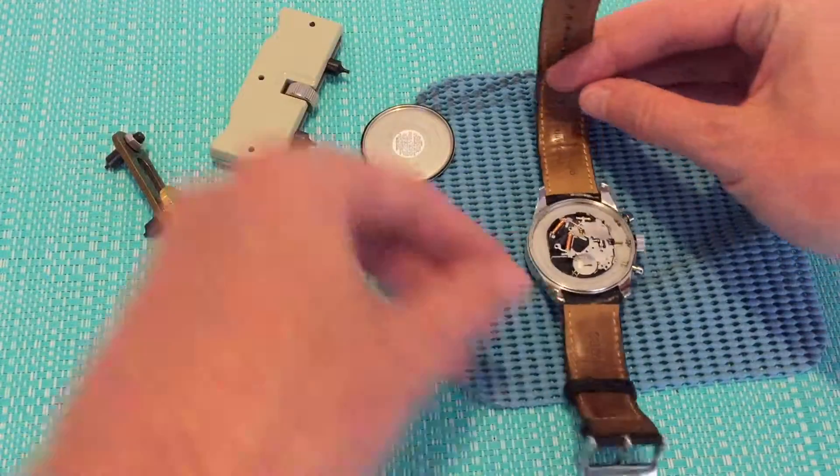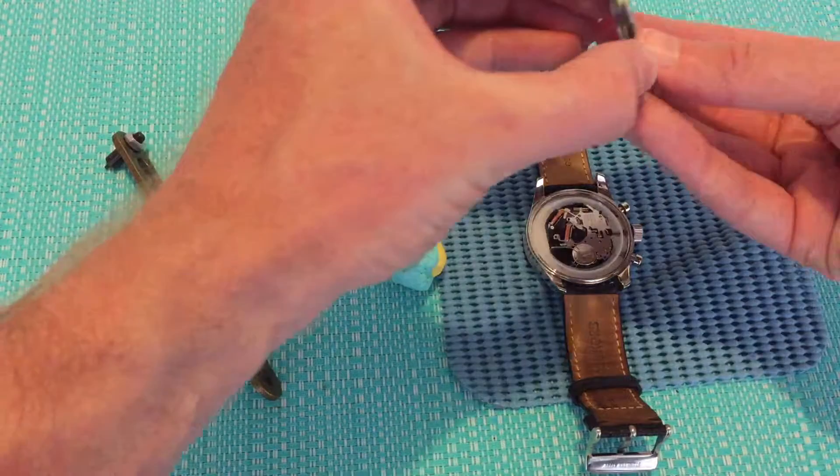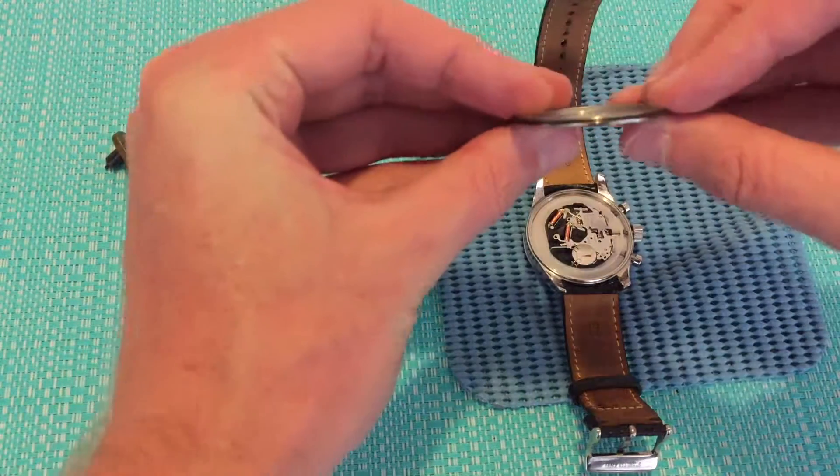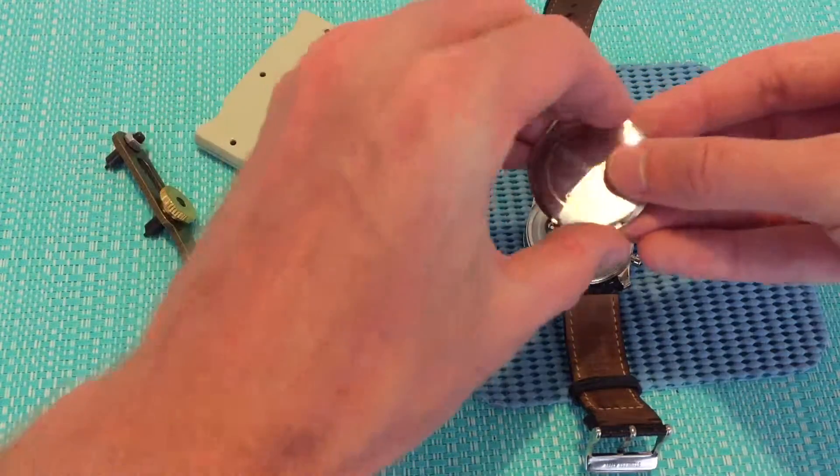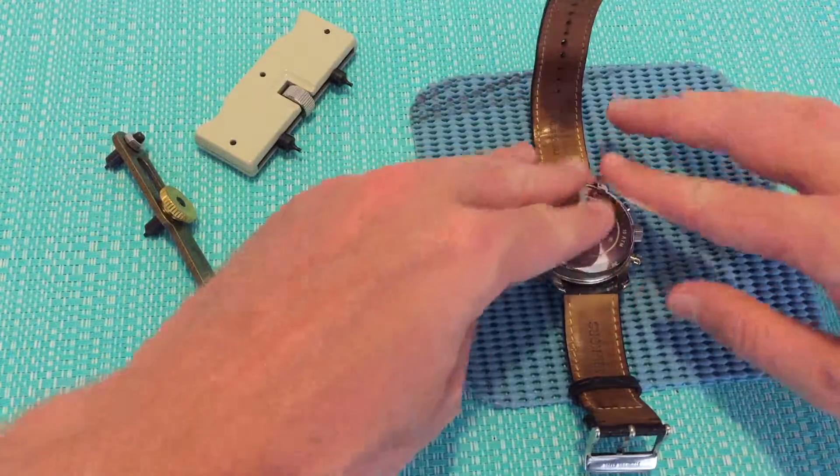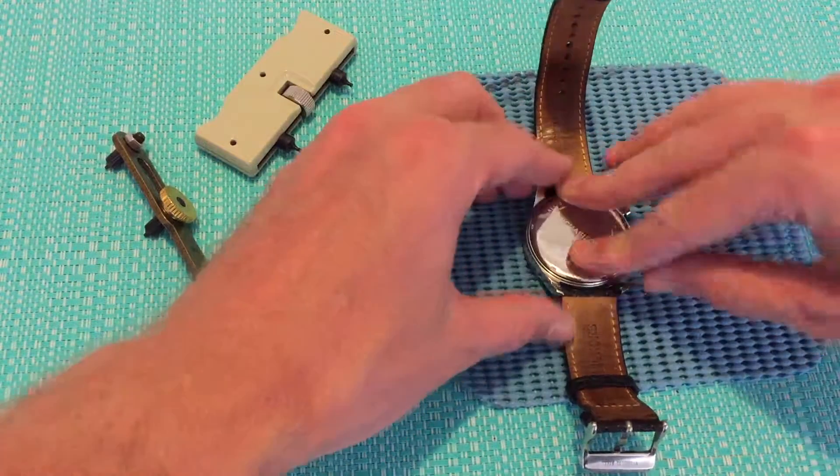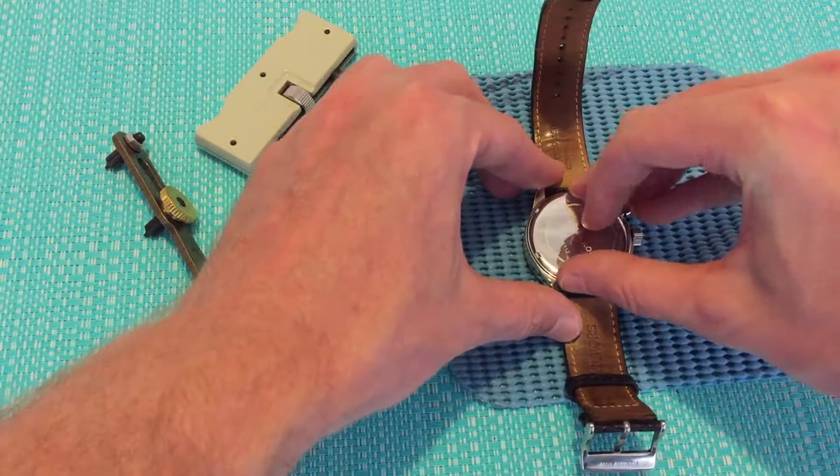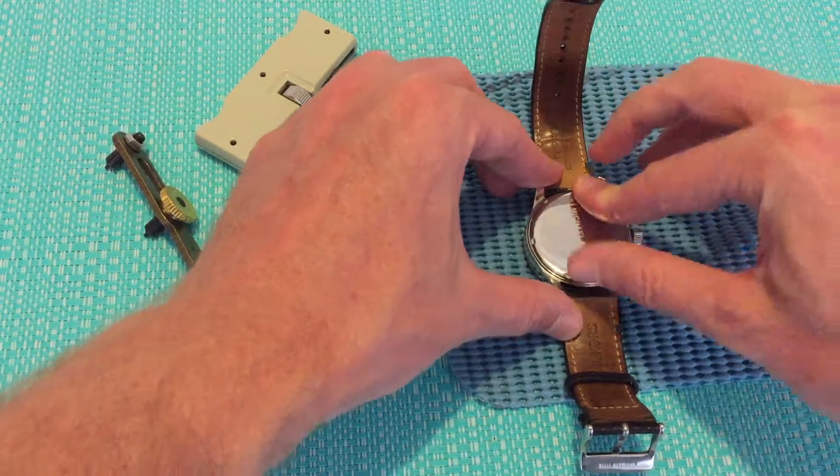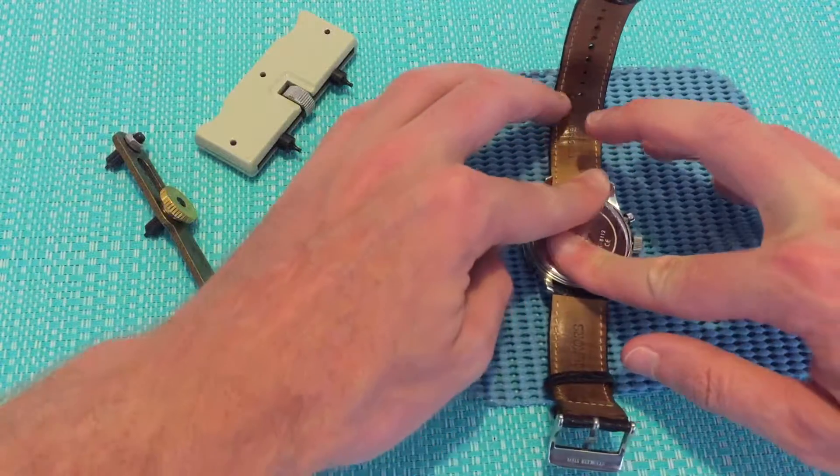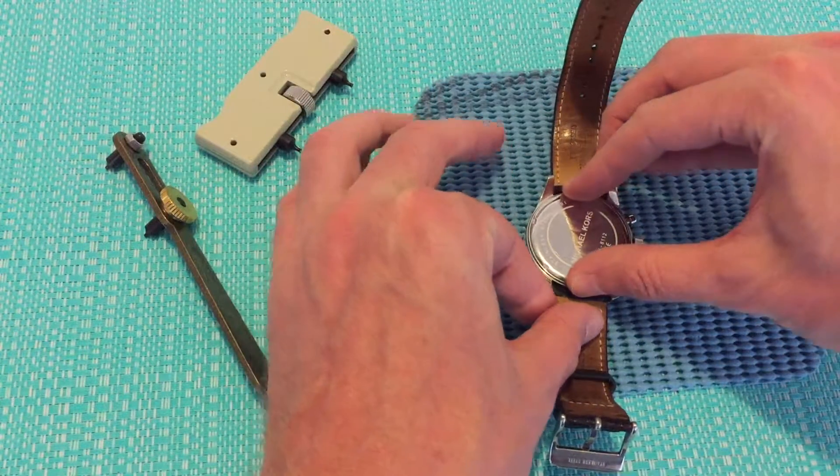You pop in your new battery and it's just reverse order. Make sure that the rubber ring is on the case back. I've got the watch here sitting on a rubber mat for two reasons: firstly, to stop the watch from slipping, and secondly, to make sure the watch doesn't get damaged at all.